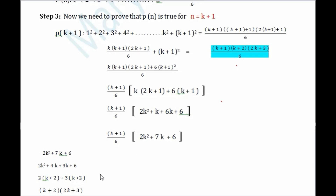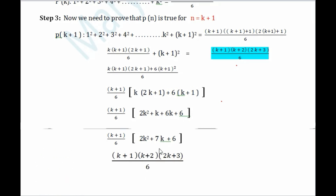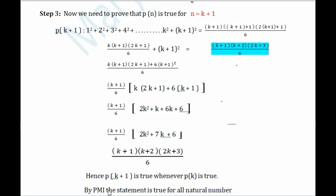The factors (k+2) and (2k+3) are substituted back, giving us (k+1)(k+2)(2k+3)/6. Now comparing LHS and RHS: (k+1) matches (k+1), (k+2) matches (k+2), (2k+3) matches (2k+3), all divided by 6. The LHS is an exact copy of the RHS. Therefore P(k+1) is true whenever P(k) is true. By the principle of mathematical induction, the statement is true for all natural numbers.